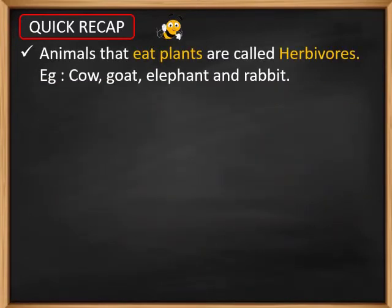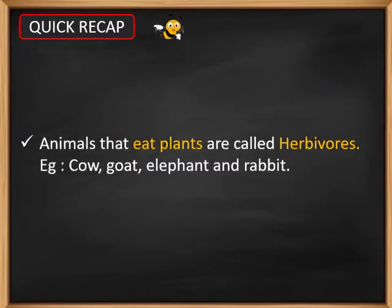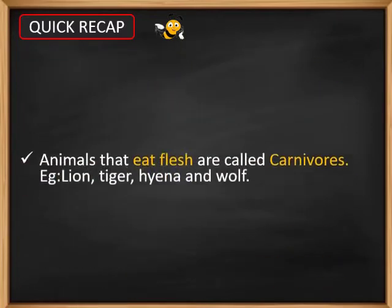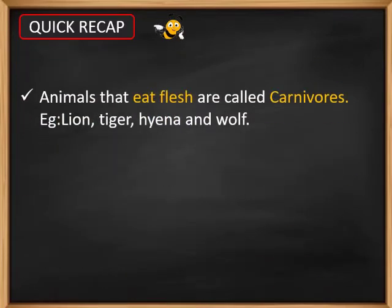Animals that eat plants are called herbivores. Examples are cow, goat, elephant and rabbit. Animals that eat flesh are called carnivores. Examples are lion, tiger, hyena and wolf.